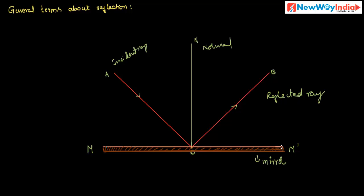A mirror is having a smooth polished surface. A ray which travels towards the surface of the mirror is called incident ray. The point where the incident ray strikes is called point of incidence. After striking the mirror, the ray reflects and moves in a different direction in the same medium — this is called reflected ray. A perpendicular drawn at the point of incidence on the surface is called normal. These are some important terms related to reflection.